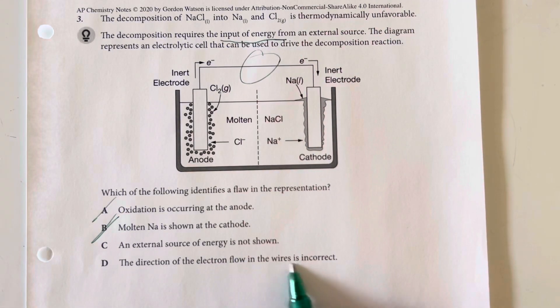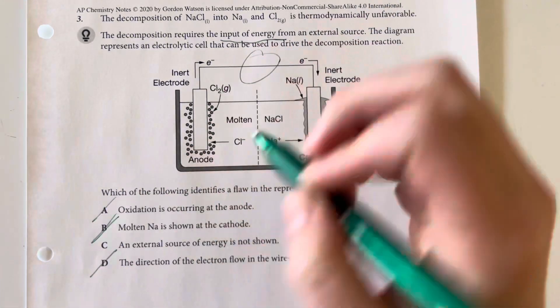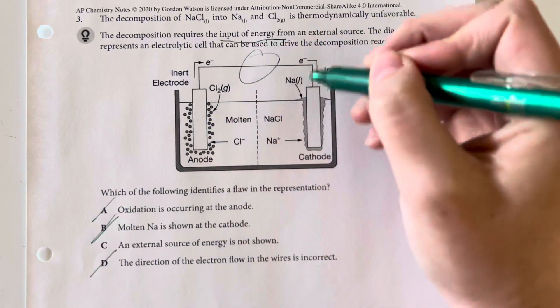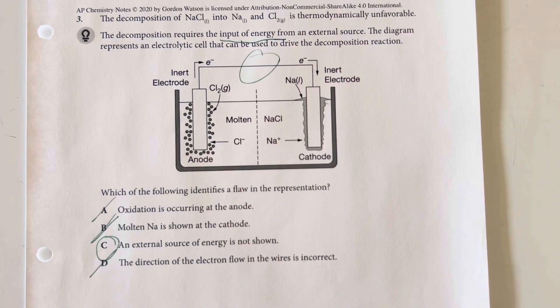And the direction of the electron flow in the wires is incorrect. Nope. The electron flow is correct. We are stealing them from my anode and giving them to the cathode. And so, option choice C where we don't have an external source of energy is going to be my biggest problem with that representation.